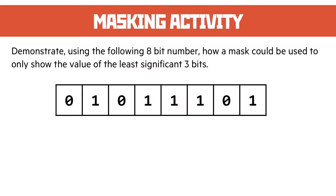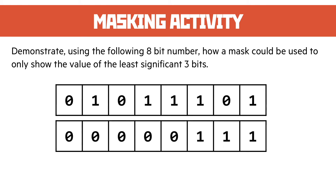On to the masking activity now. This is very much the same year after year — it's going to be masking, encrypting, or resetting the value of a register. What they want you to do in this case: demonstrate, using the following 8-bit number, how a mask could be used to only show the value of the least significant 3 bits. The first thing to do is identify what the mask looks like. The least significant 3 bits are the 3 bits on the right, so to mask it, we have all zeros apart from the bits we want to see. Then masking involves using AND as our logical operation. We go through one column at a time and perform an AND. You only get the exact bit values from the 3 on the right-hand side, so we get a bunch of zeros until there.